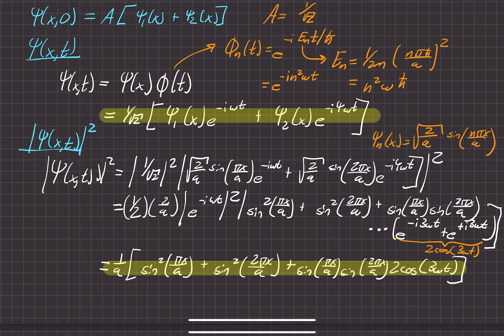Not anything glaringly physically illuminating, but we do have this time-dependent form with 2 cosine of 3 omega t, which is exactly what we were looking for as the answer to part b.